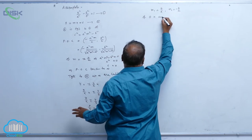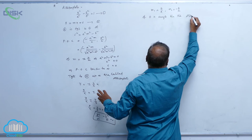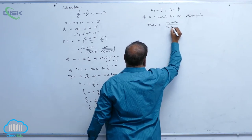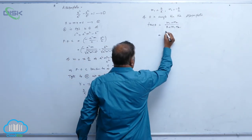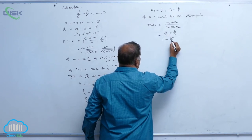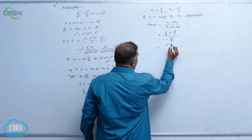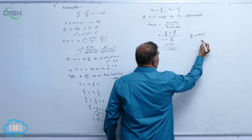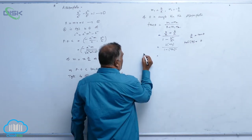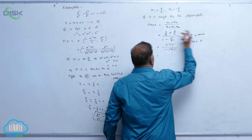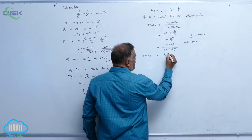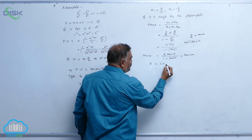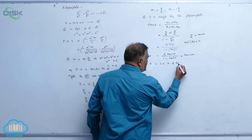If θ is the angle between the asymptotes, we have the formula tan θ = (m₁ − m₂) / (1 + m₁m₂). Applying the formula: this is (b/a + b/a) / (1 − b²/a²), which simplifies to 2(b/a) / (1 − (b/a)²). Let b/a = tan α, so α = tan⁻¹(b/a). Then this becomes 2 tan α / (1 − tan²α), which equals tan 2α. So θ = 2α = 2 tan⁻¹(b/a).